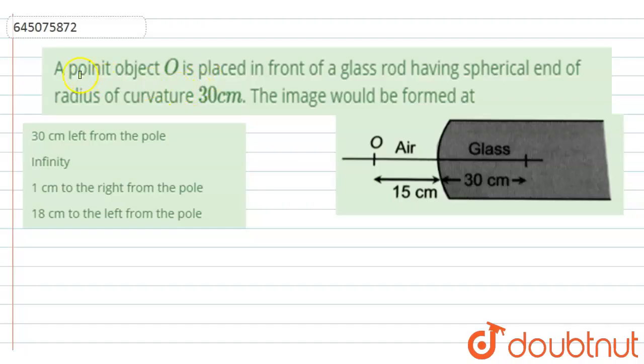The given question is: a point object O is placed in front of glass rod having spherical end of radius of curvature 30 centimeters. The image would be formed at, and these are the given options.